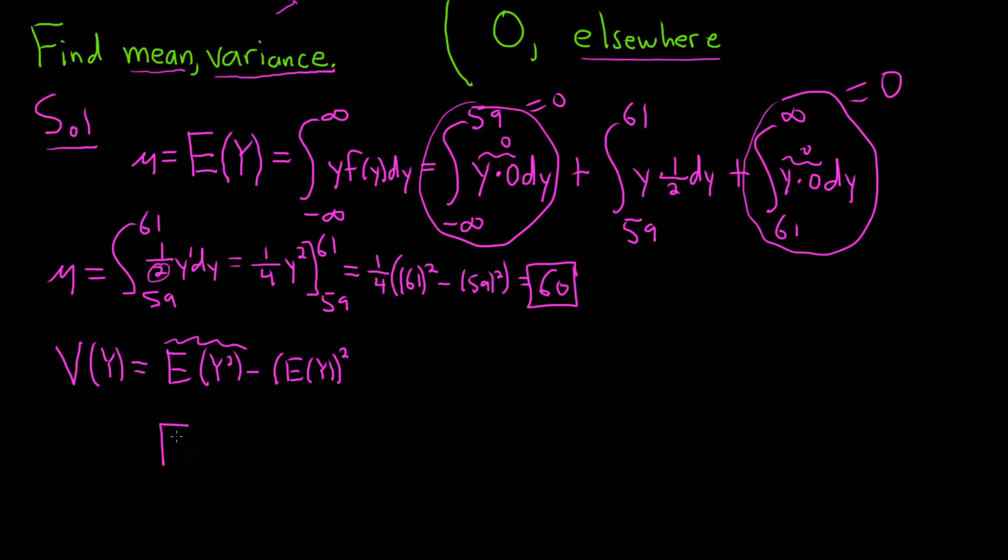There's a formula for this. If you are trying to compute the expected value of a function of a random variable, this is equal to the improper integral from negative infinity to infinity, and you just simply put a little y squared here, and then f of y, dy.